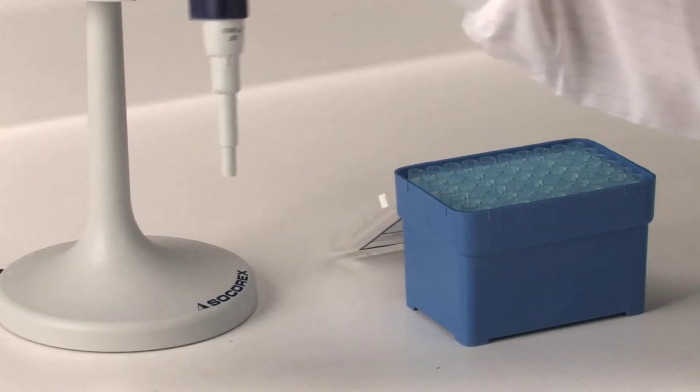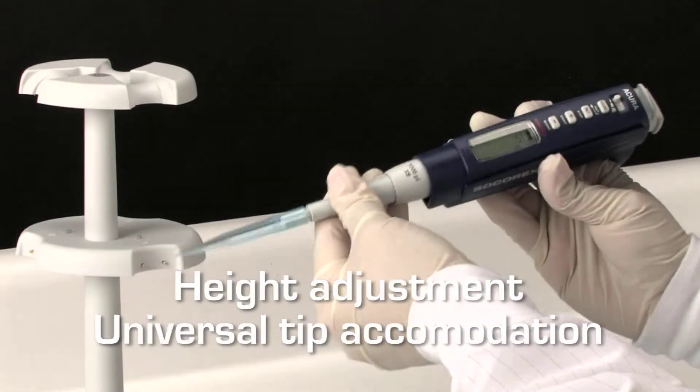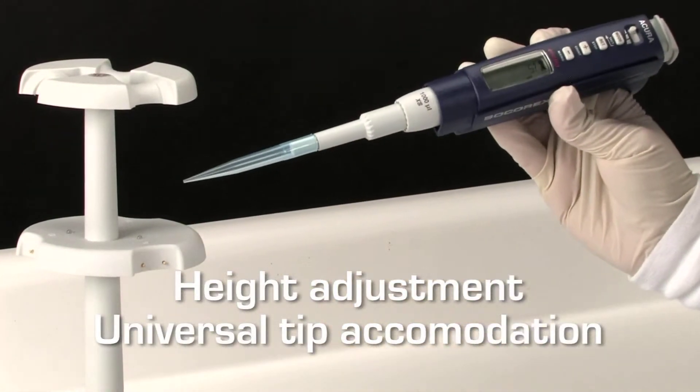Acura Electro Pipettes fit the most popular brands of disposable tips. The tip ejector is adjustable within a 4 mm span, simply by turning the ejector sleeve.